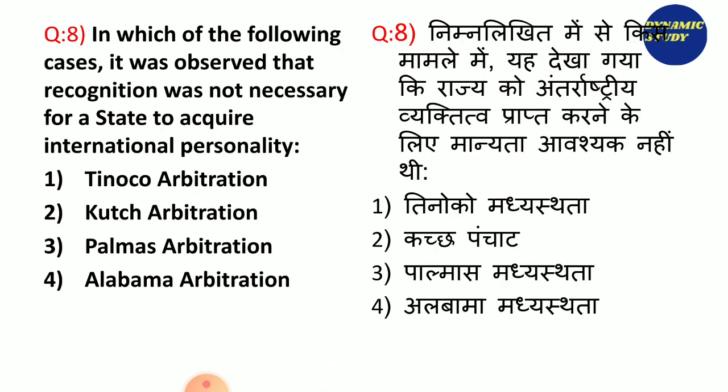In which of the following cases was it observed that recognition was not necessary for a state to acquire international personality? Options: 1. Tinoco arbitration, 2. Kutch arbitration, 3. Palmas arbitration, 4. Alabama arbitration. And the answer is Tinoco arbitration.